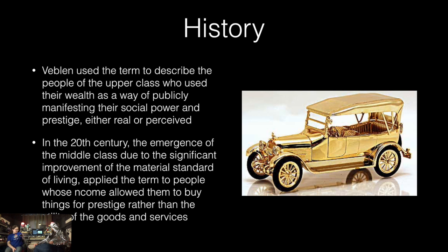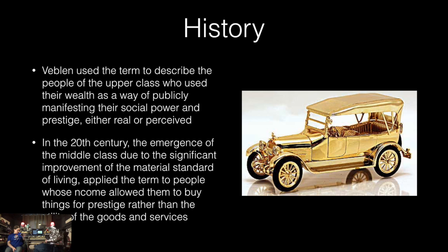So, history. Veblen used the term to describe people of the upper class who used their wealth as a way of publicly manifesting their social power and prestige — either real or perceived. In the 20th century, the emergence of the middle class, due to significant improvement of the material standard of living, applied the term to people whose income allowed them to buy things for prestige rather than the utility of the goods and services.